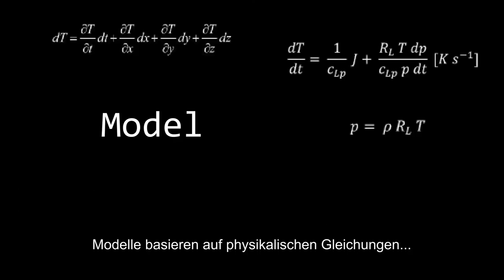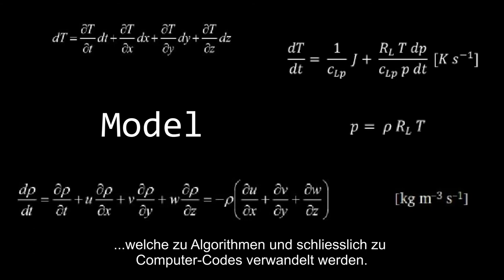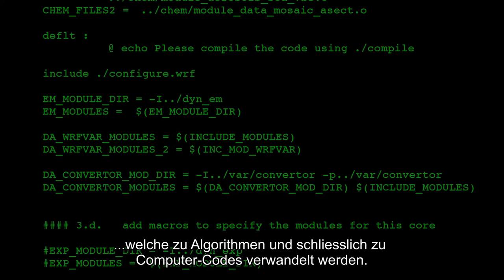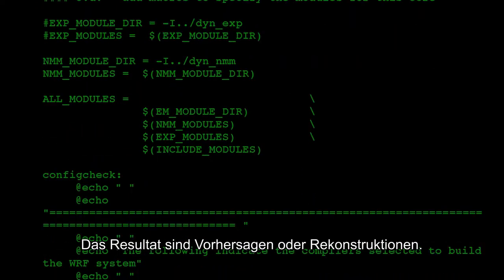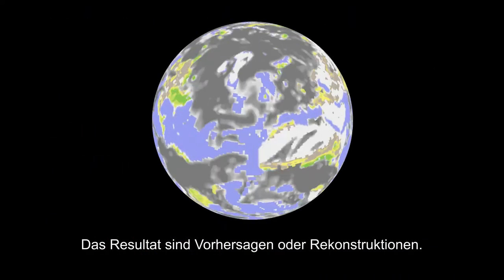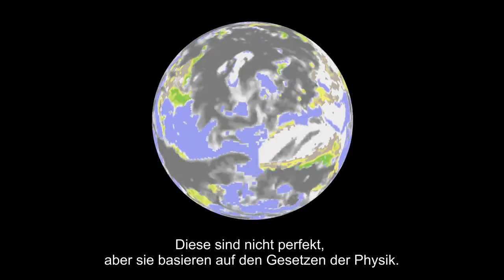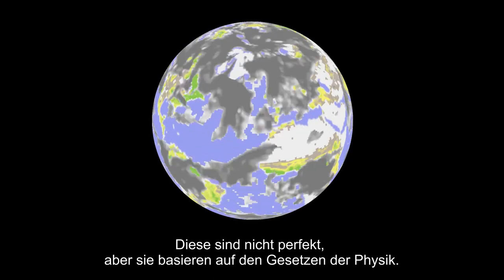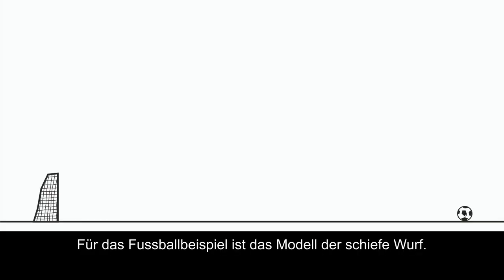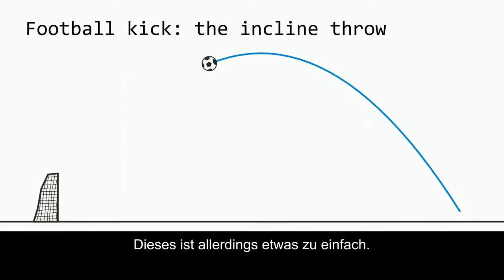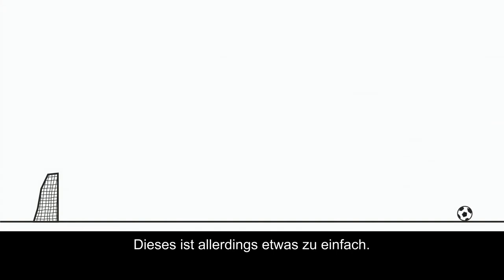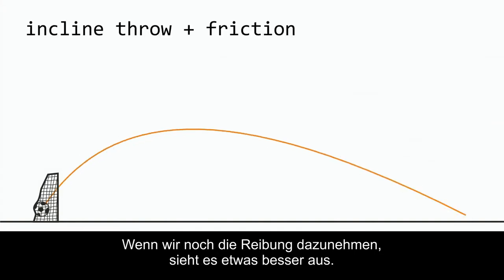Models are based on physical equations which are transformed into algorithms and finally into computer code. This code is then run on supercomputers and the results are forecasts or reconstructions. Those are not perfect, but they do obey the laws of physics. For the case of the football kick, the model is the incline throw. This model, however, is a bit too simple. If we also account for friction, it already looks more realistic.